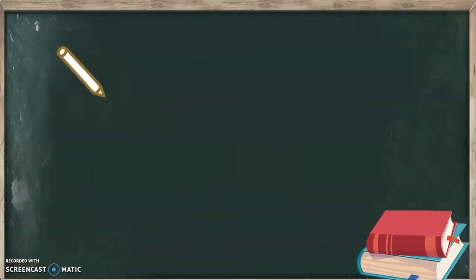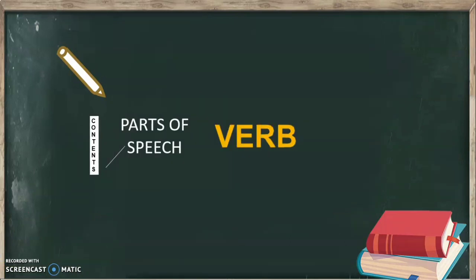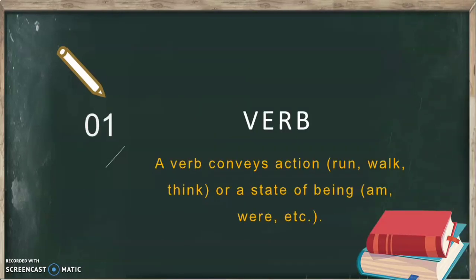Today we are doing verbs. We are going to talk about verbs. A verb is a very important part of speech because it makes the sentence complete. Without other parts of the predicate, a verb can serve just as the predicate. If you have your subject — any kind of noun — and then you connect a verb to it, that is a whole sentence already. A verb conveys action; it's an action word. However, it's not all about action. Verb is also a state of being.